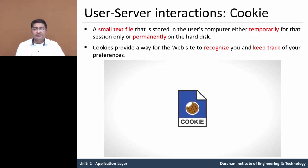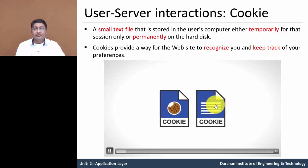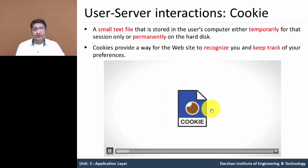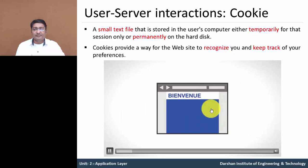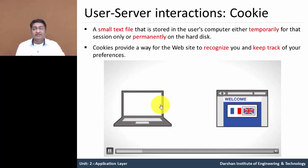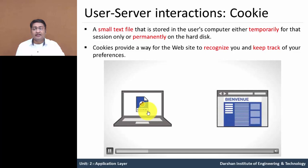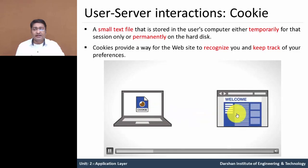A cookie is a small text file which is stored in your hard drive, the user's computer. When you visit any website and choose a language preference such as English rather than another language, that website sets a cookie — meaning it stores a cookie in your hard drive with English as the language preference. After some time, if you visit the same website again, it sets English by default because the cookie is already set to English language.